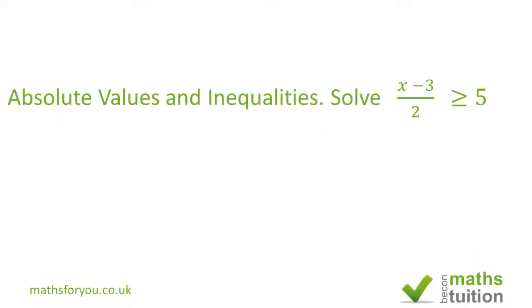Hello and welcome to this exercise on absolute values and inequalities. We are asked to solve that the absolute value of (x minus 3) over 2 is greater than or equal to 5. I'm going to use three methods.